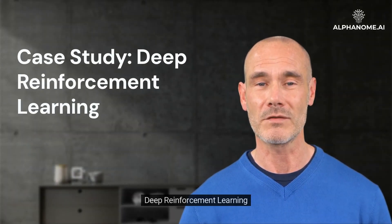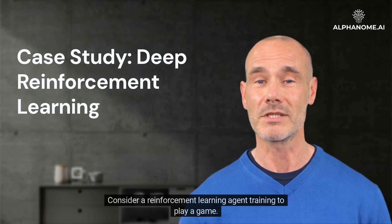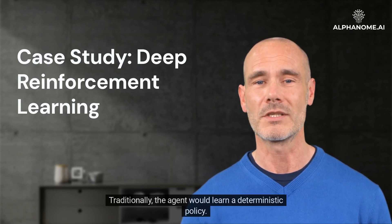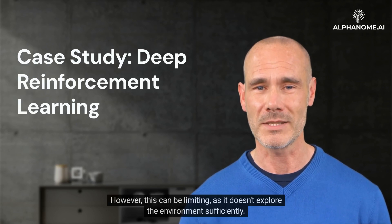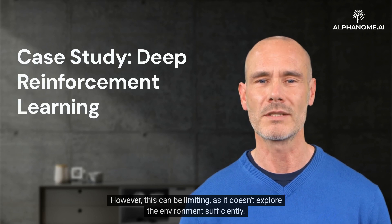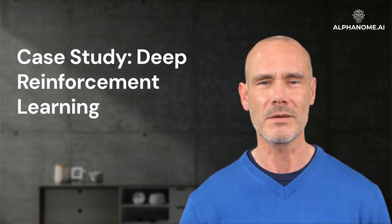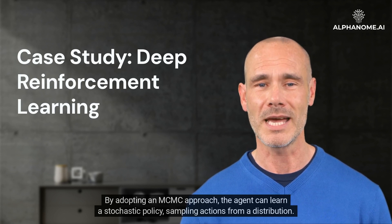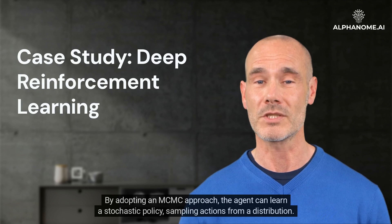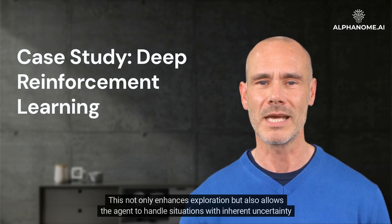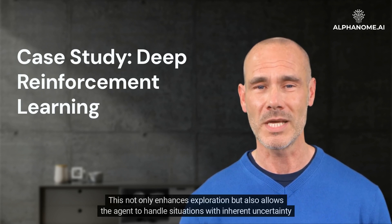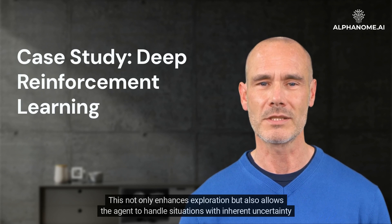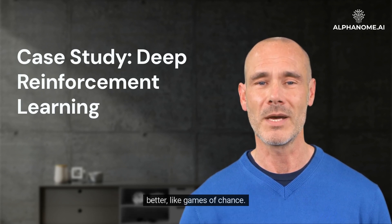Case study: Deep Reinforcement Learning. Consider a reinforcement learning agent training to play a game. Traditionally, the agent would learn a deterministic policy. However, this can be limiting, as it doesn't explore the environment sufficiently. By adopting an MCMC approach, the agent can learn a stochastic policy, sampling actions from a distribution. This not only enhances exploration but also allows the agent to handle situations with inherent uncertainty better, like games of chance.